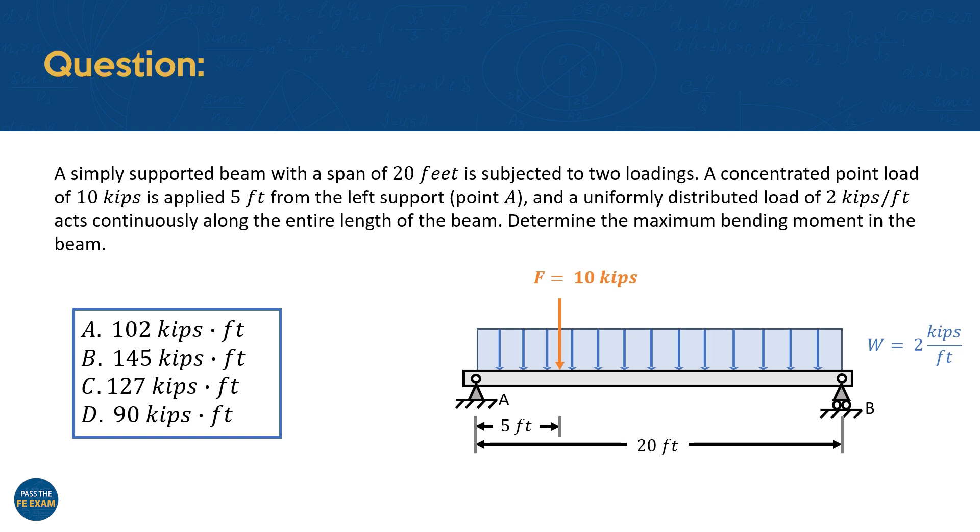In today's problem, we are tasked with analyzing a 20 feet long simply supported beam subjected to both a point load and a uniformly distributed load. The point load is applied at a distance of 5 feet from support A, while the uniformly distributed load of 2 kips per feet is applied across the entire span of the beam. Our goal is to determine the maximum bending moment in the beam.